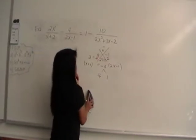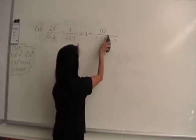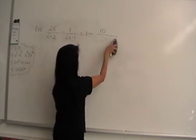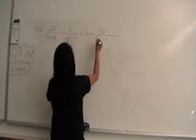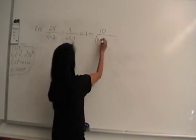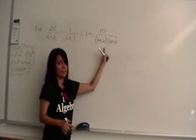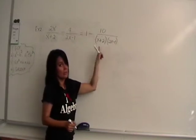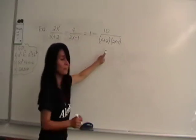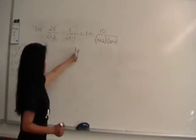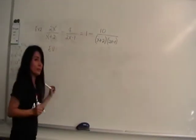Copy that factored form and rewrite the original equation with the last denominator in factored form as (x plus 2)(2x minus 1). This is your second step when showing work on a test. Now we have all denominators visible and can identify excluded values.